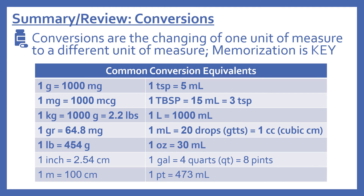Now for a summary and review of conversions. Conversions are the changing of one unit of measure to a different unit of measure, and memorization is key. Common weight conversion equivalents: one gram equals 1,000 milligrams; one milligram equals 1,000 micrograms; one kilogram equals 1,000 grams, which also equals 2.2 pounds; one grain (GR) equals 64.8 milligrams; one pound equals 454 grams.